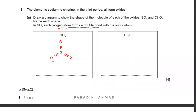You have to draw a diagram to show the shape and name each shape. SO3 is trigonal planar. Now for Cl2O, oxygen is in the middle. Oxygen is in group six so it's making two bonds with Cl.